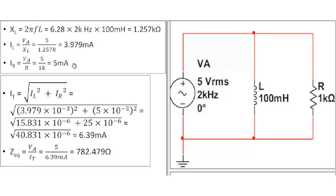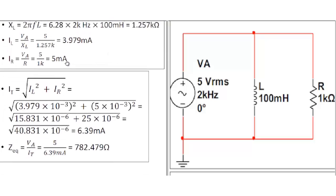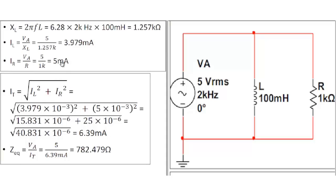The RMS label is missing here as well. Now, when you look at this, you might say: I got 5 milliamps going through a resistor and 3.979 milliamps going through an inductor, so I'll just add those up for the total current flow into the parallel branch from the voltage source. Well, that's not correct.